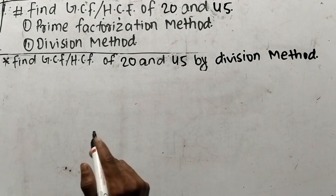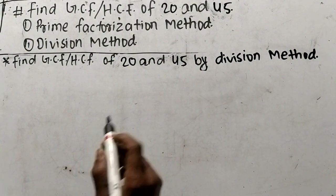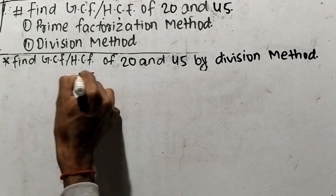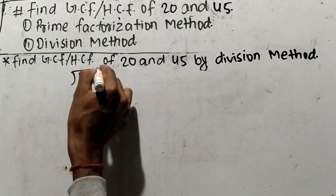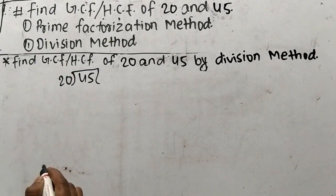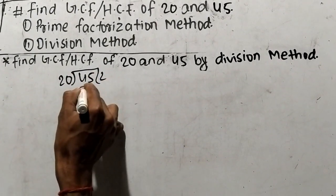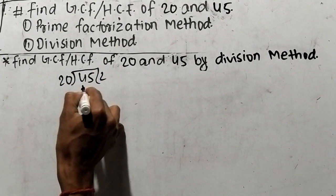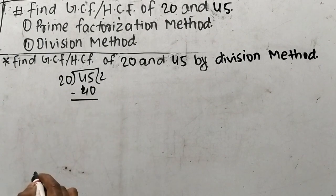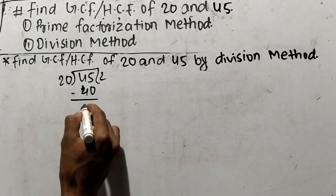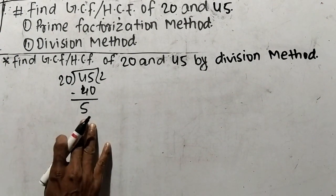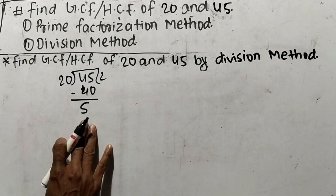While finding out GCF or HCF by division method, we have to divide the greater number, which is 45, with the lesser number, which is 20. So 20 times 2 means it is 40, and 45 minus 40 means it is 5. So here 5 comes as remainder.